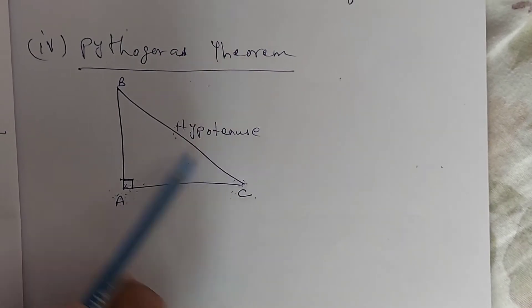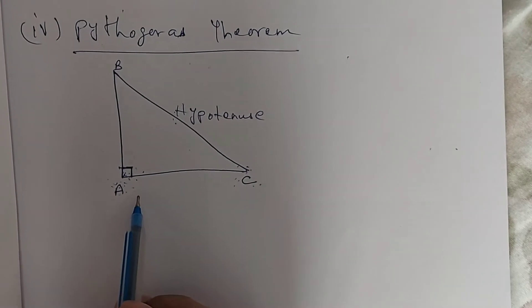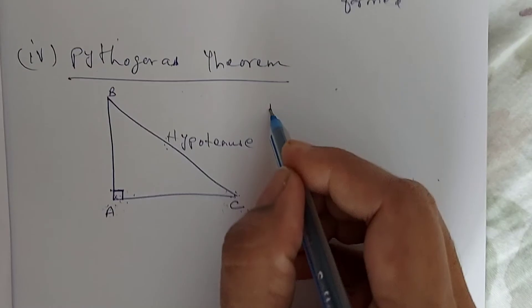Here it is BC. BC is hypotenuse and AB, AC are the legs of the right-angled triangle ABC.